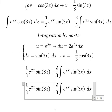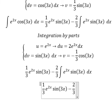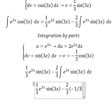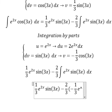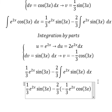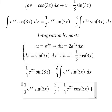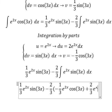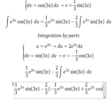So u multiplied by v we have negative 1 over 3 e to the power of 2x cosine 3x. Because we have the negative sign here, negative with negative we have positive, and we have 2 over 3 e to the power of 2x cosine 3x.